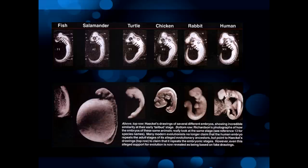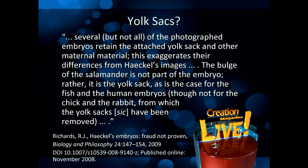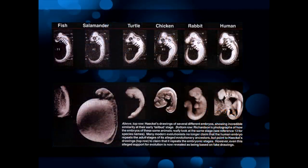In his paper, Richards the historian blasts Richardson the embryologist for conclusions 'founded on highly misleading photography.' If you look at the diagrams, here are Haeckel's original drawings and here are the photographs Richardson took — you can obviously see that the photos are completely different from the drawings. What Richards does to counter Richardson's photography is argue that several of the photographed embryos retain attached yolk sacs and other maternal material, which he claims exaggerates their differences from Haeckel's images.